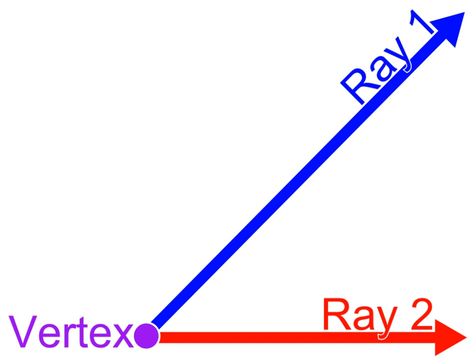Similar statements hold in space. For example, the spherical angle formed by two great circles on a sphere is the dihedral angle between the planes determined by the great circles.